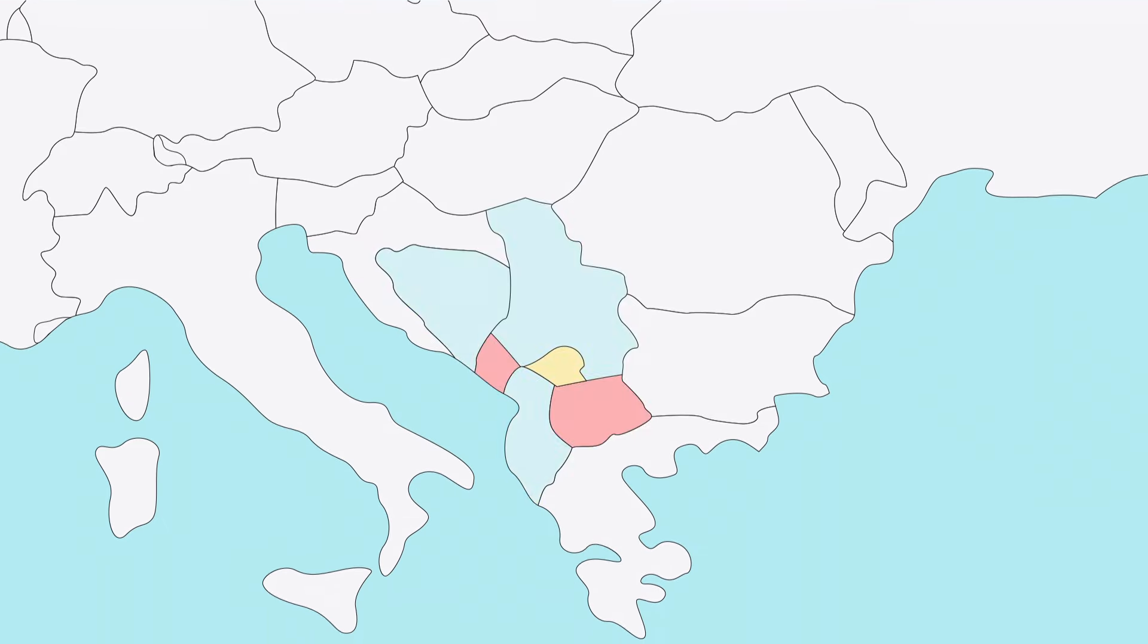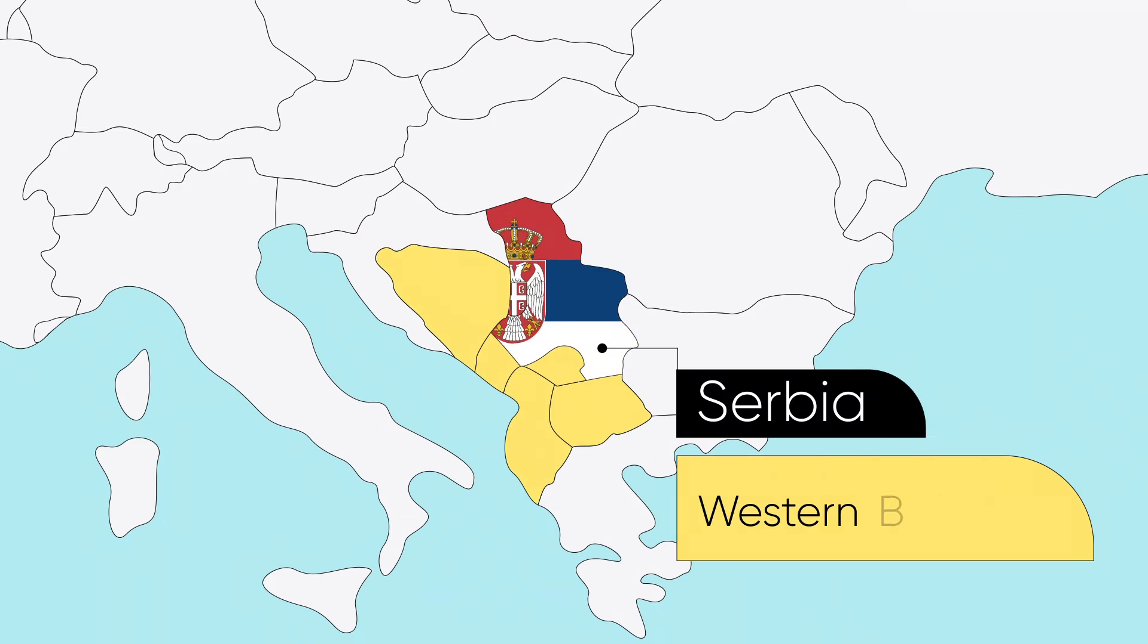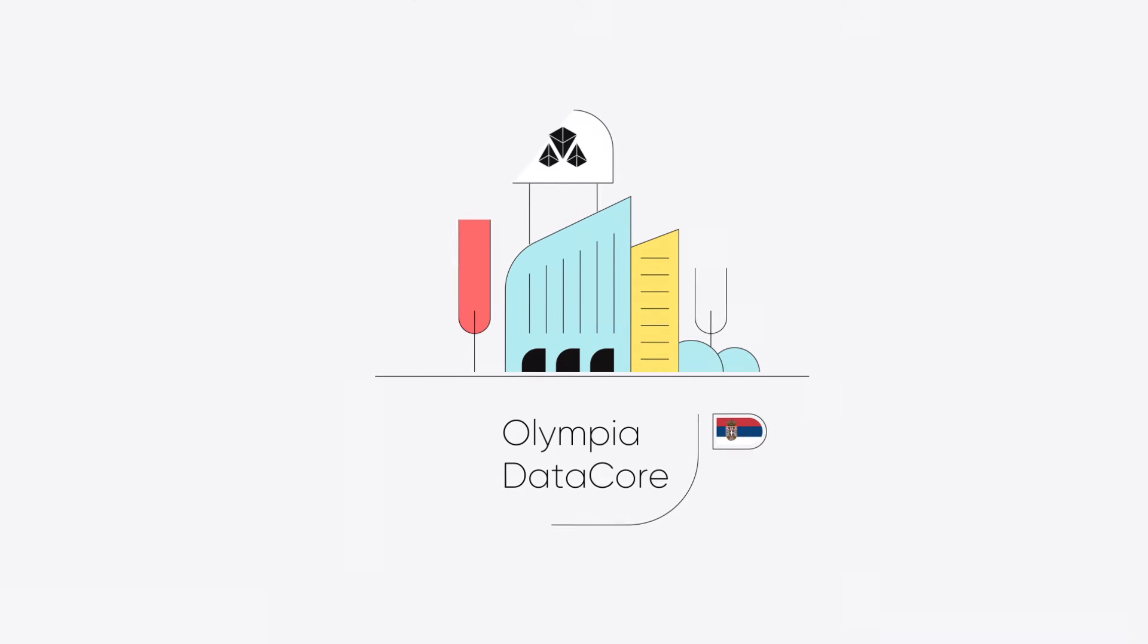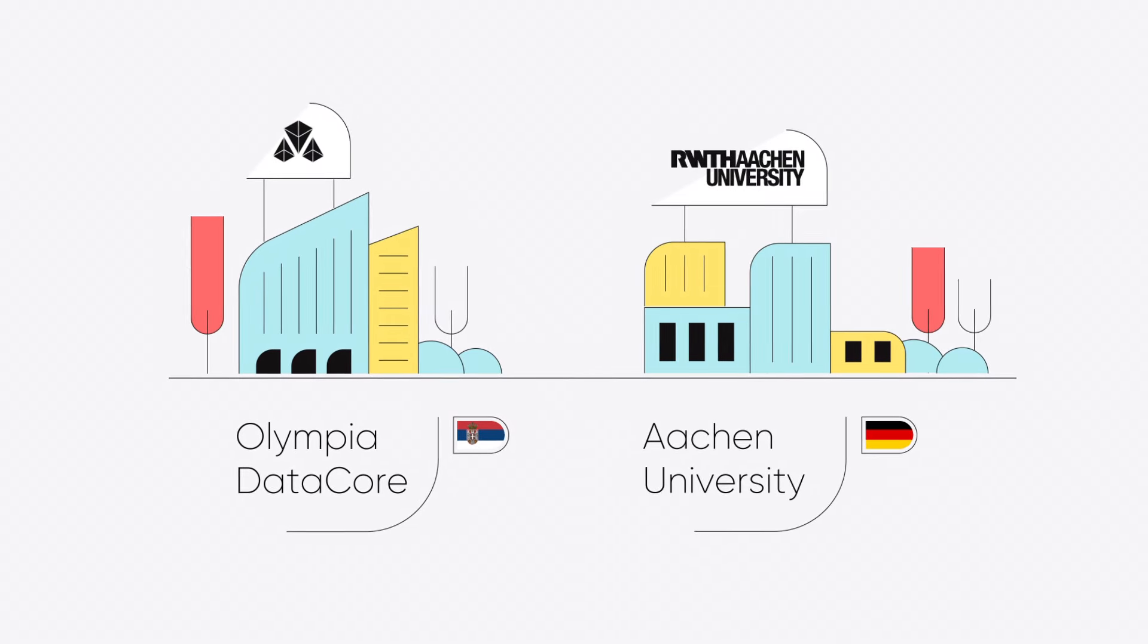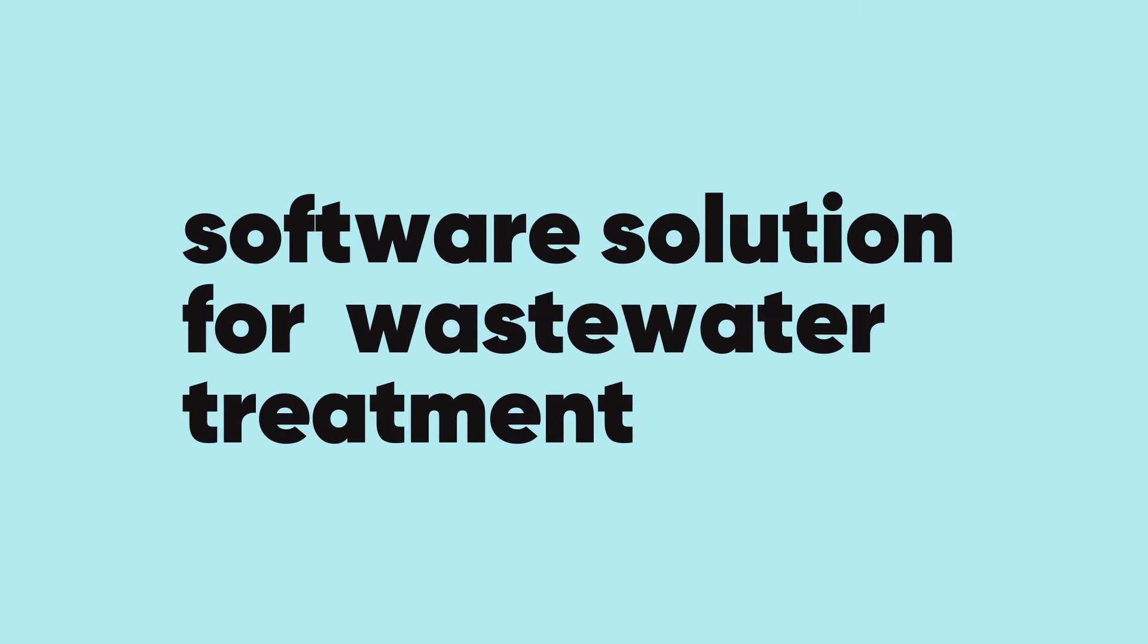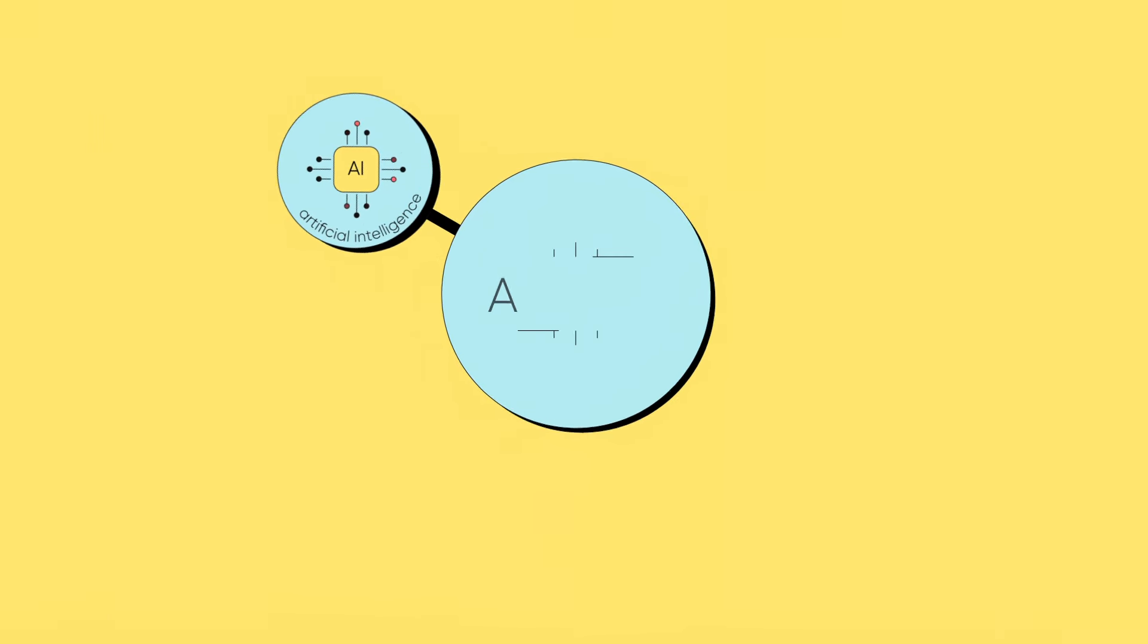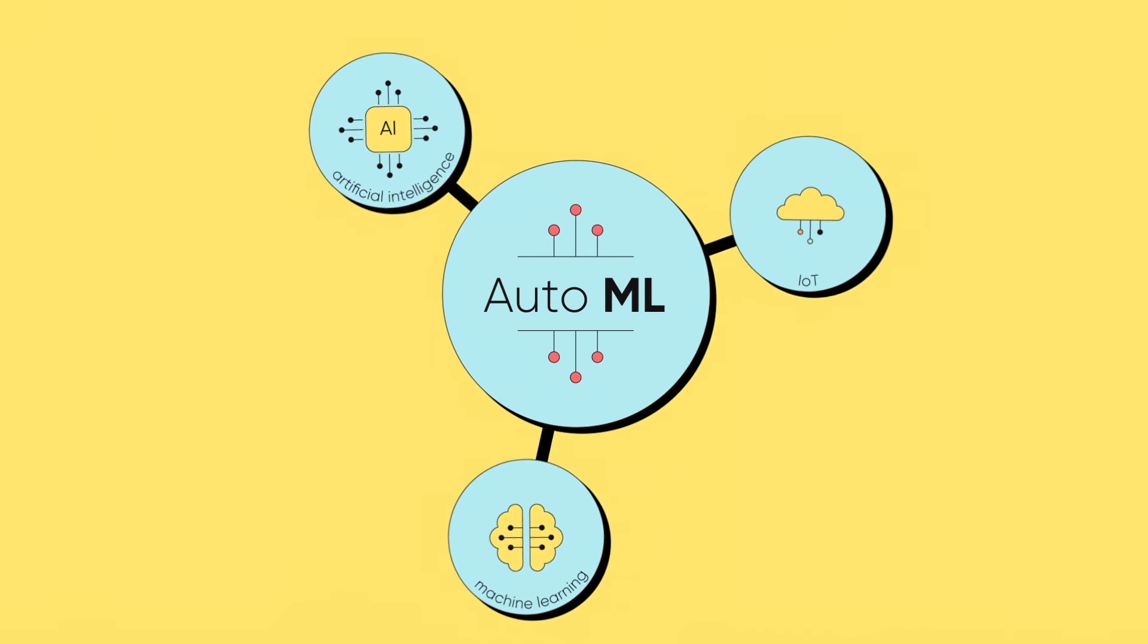Considering the wide field for innovation on wastewater management in western Balkan countries and focusing in Serbia, Olympia DataCore, an SME based in Serbia, collaborated with Aachen University in Germany to develop a software solution for wastewater treatment supported by artificial intelligence, machine learning, and IoT.